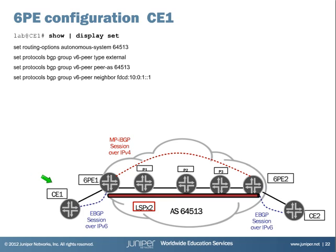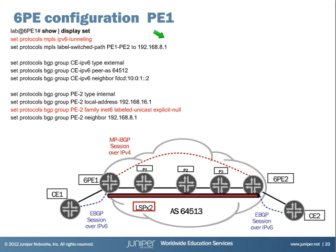For the CE routers, the customer routers, they can be dual-stack or IPv6-only. Here for example it runs IPv6-only and runs eBGP over IPv6 with 6PE1. For the PE routers, highlighted in red, there are two commands that do all the 6PE magic. The first is 'set protocols mpls ipv6-tunneling', which as we've seen converts all entries in inet.3 into IPv4-compatible IPv6 addresses and copies them into inet.6.3. The second command is 'family inet6 labeled-unicast explicit-null', which you add to your existing IPv4 iBGP session between the PEs and makes them advertise a label value of 2 for 6PE as discussed.